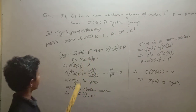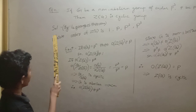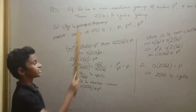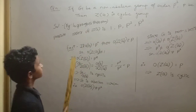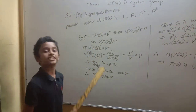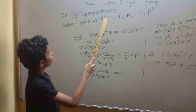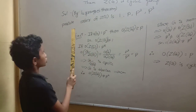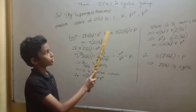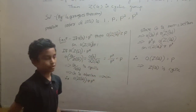We are going to start the solution with Z of G. We know that Z of G is a subgroup of G. So, by Lagrange's theorem, the possible orders of Z of G are 1, P, P square, and P cube.